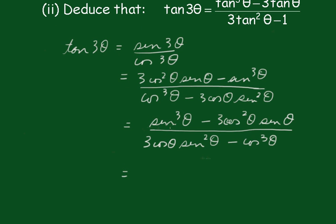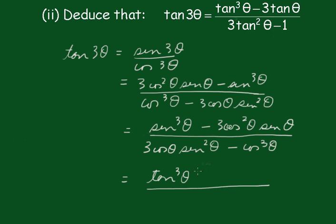Dividing by cos³θ, I'm going to get tan³θ at the start — and that's the start of what we wanted. There's our tan³θ, and then this minus term, dividing it — let me just write that in so we can see what that does.